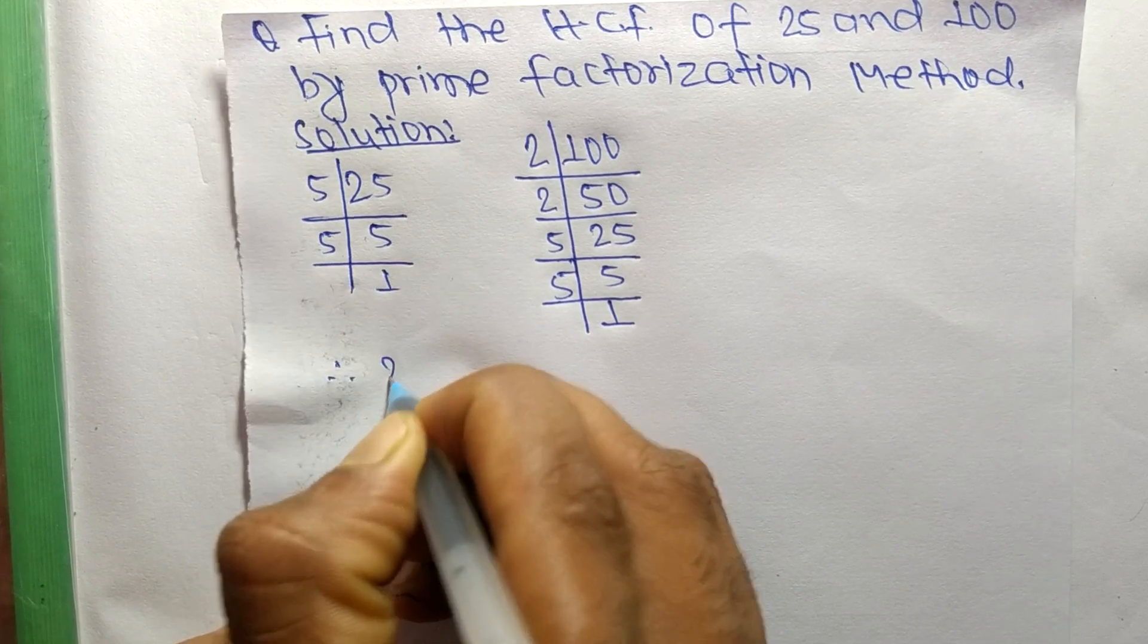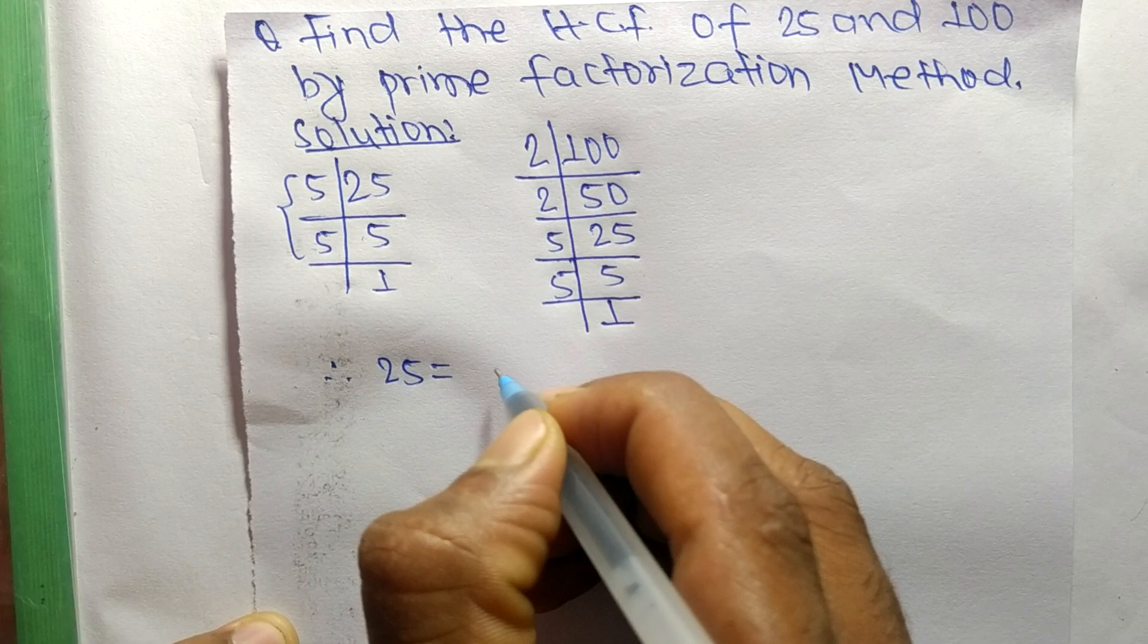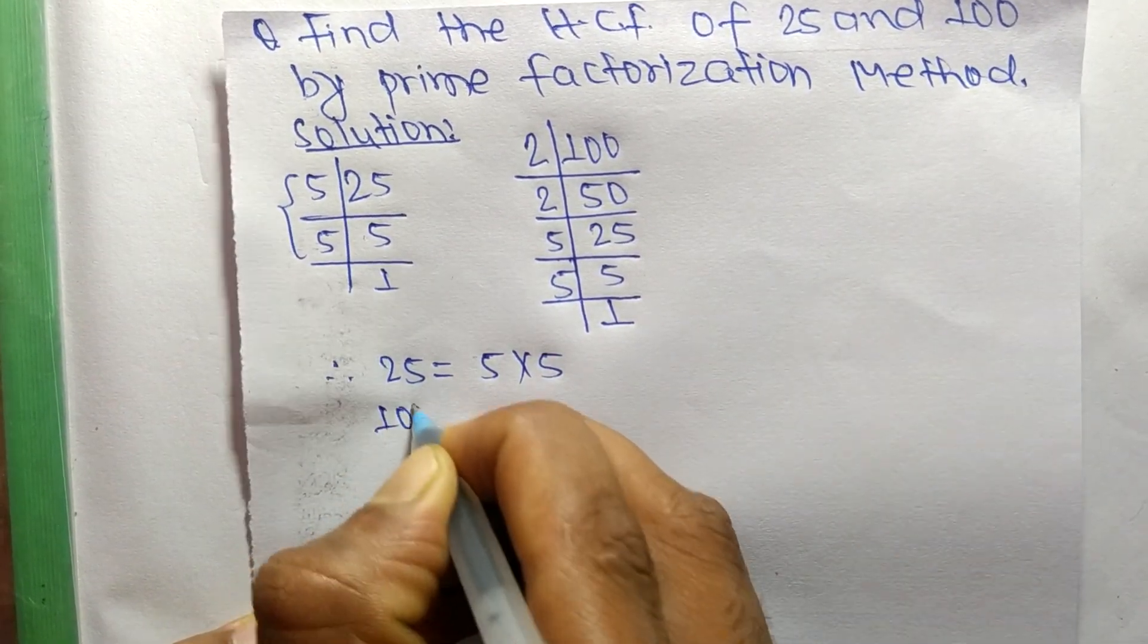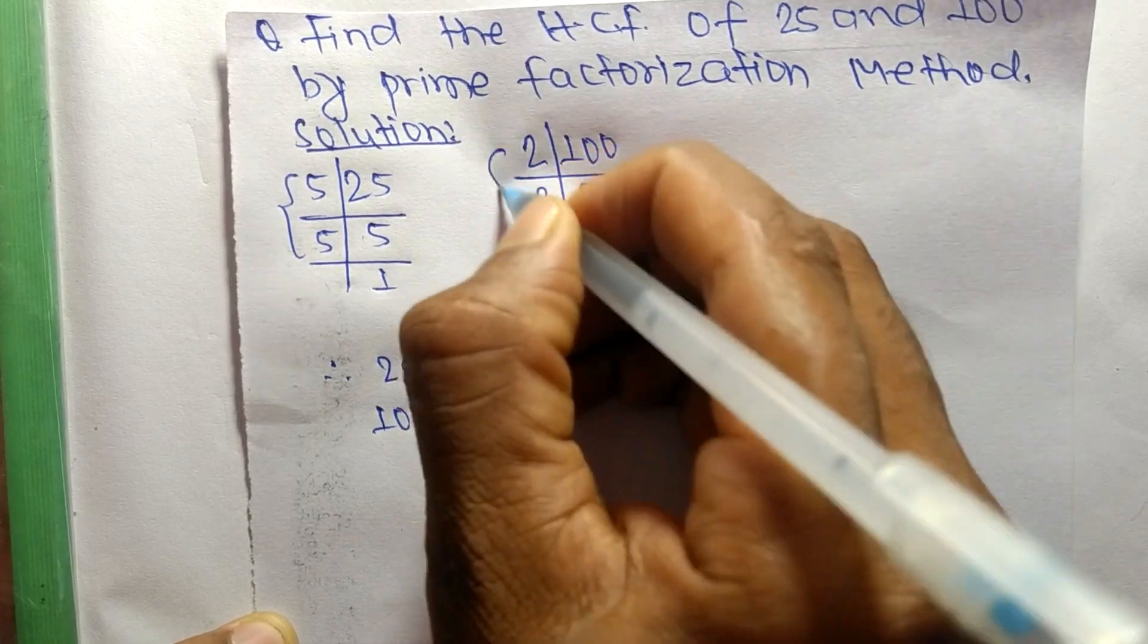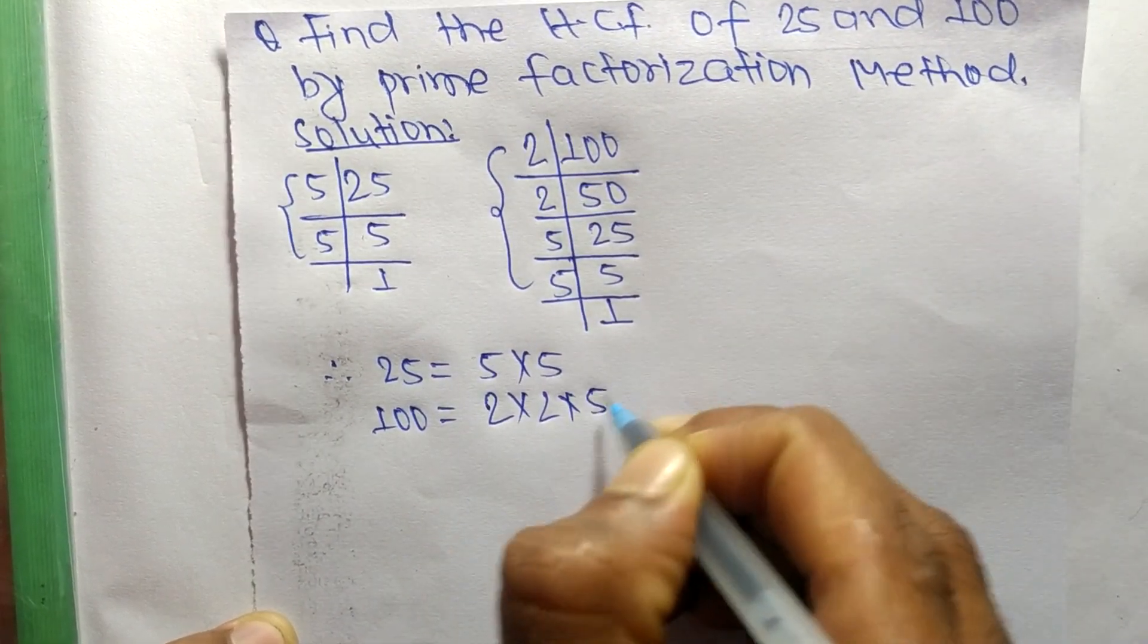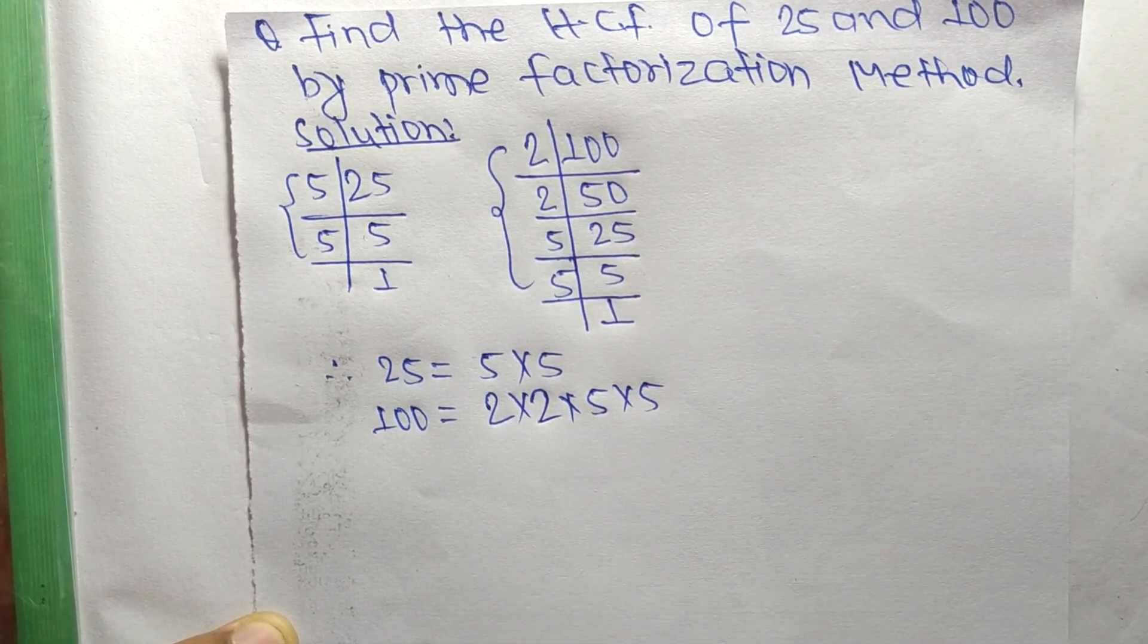So now from these prime factors, we can write 25 is equal to 5 times 5, and 100 is equal to 2 times 2 times 5 times 5.